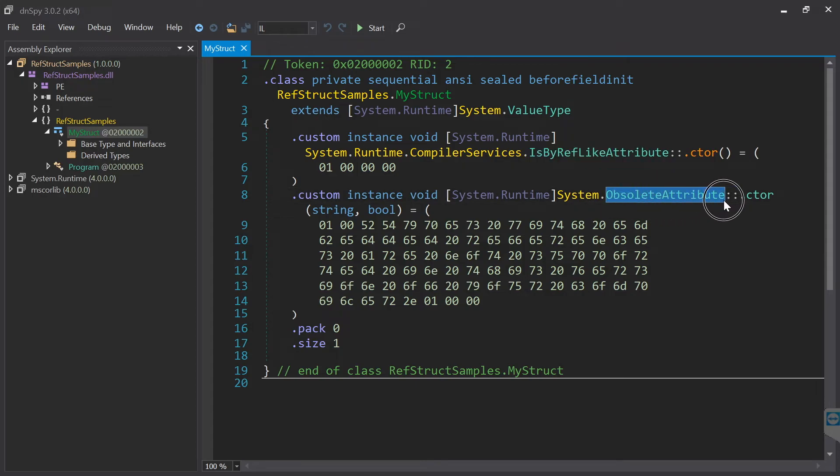The IsRefLike attribute tells the CLR that this is a ref struct. The second one is an obsolete attribute which ensures that such a ref-like type is not used by an older compiler.